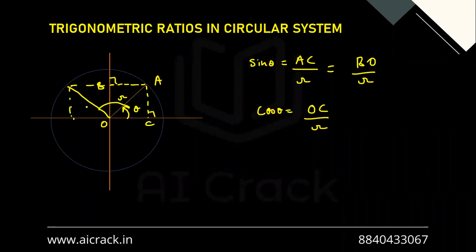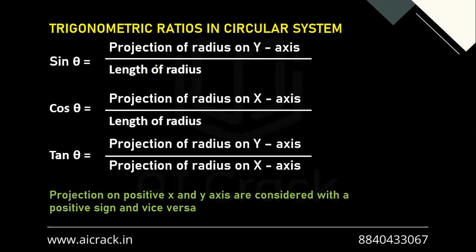When the angle is in the second quadrant, the projection on the X-axis falls on the negative X-axis, so that length is negative. That is how we know that in different quadrants the signs of these trigonometric ratios change. The formal definition: sine theta is projection of radius on Y-axis divided by radius; cos theta is projection on X-axis divided by radius; tan theta follows accordingly. Projections on positive axes are considered positive and on negative axes are negative.